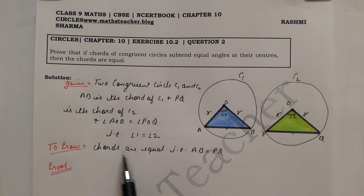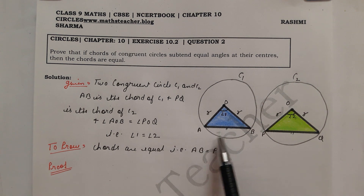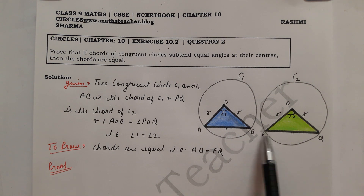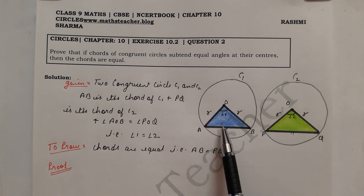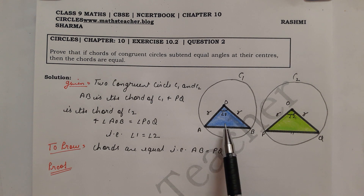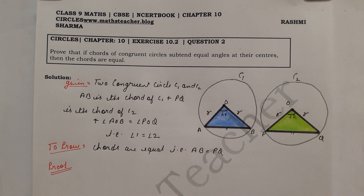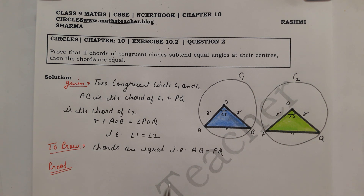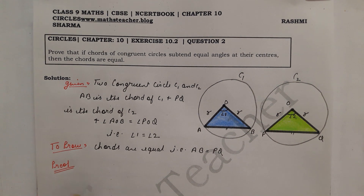To Prove: chords are equal, that means we have to prove AB equals PQ. If there are equal sides and equal angles in two triangles, then in a simple way, make the two triangles congruent. Once the two triangles are congruent, the remaining sides and remaining angles are also equal.